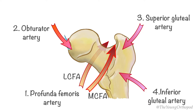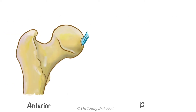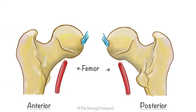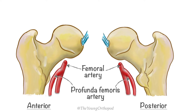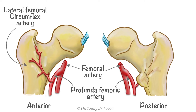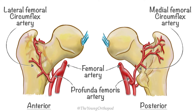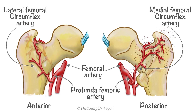These form the trochanteric and cruciate anastomosis around the femoral neck, contributing to the extracapsular arterial ring. This ring consists of the ascending branch of the lateral femoral circumflex artery anteriorly and the ascending branch of the medial femoral circumflex artery posteriorly, and tends to be incomplete. The major arterial supply to the femoral head is the lateral segment of the arterial ring, which is the terminal branch of the medial femoral circumflex artery.